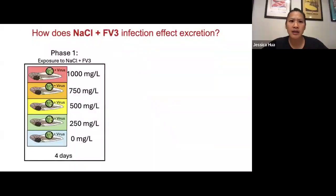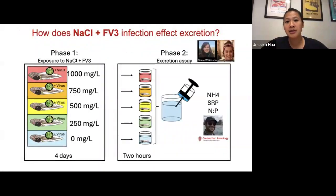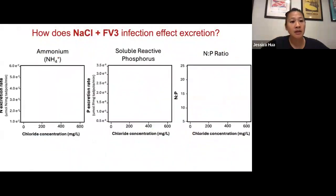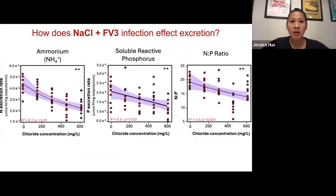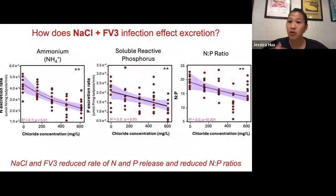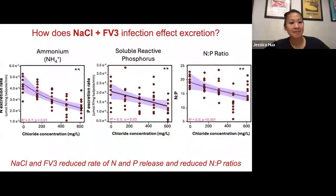In this final part: how does the virus and salt in combination influence excretion rates? We ran a very similar study, but this time tadpoles were both sick and exposed to environmentally relevant concentrations of road salts. We collected excretion and measured the same metrics. On the x-axis is chloride concentration; on the y-axis are the three nutrient metrics. In contrast to before, when tadpoles are exposed to both stressors together, we see a completely different story: as chloride concentration increases, nitrogen and phosphorus excretion rates decrease, and so do NP ratios.